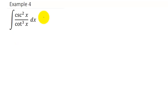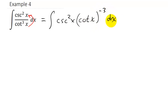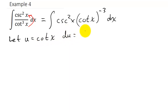I'll rewrite this as cosecant squared x times cotangent x in parentheses to the negative 3 dx. I'm going to let u equal cotangent x, so du equals negative cosecant squared x times dx. I have cosecant squared x dx, but I need the negative — I have everything but the negative.